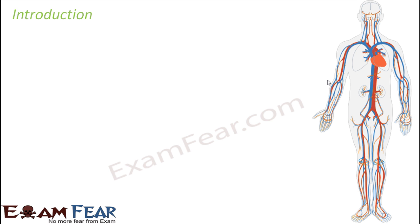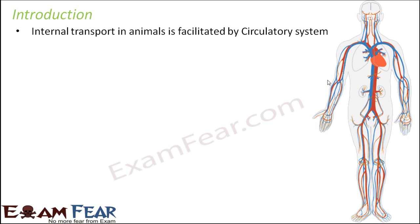In this lesson we are going to talk about body fluids — the fluids present inside our body. One of them is blood, but there are other body fluids as well, such as lymph. When we talk about circulation, we are basically talking about internal transport in all animals. Every living organism needs minerals, nutrients, and water transported to each and every part of its body, and for that you need a means of carrying substances — the circulatory system.